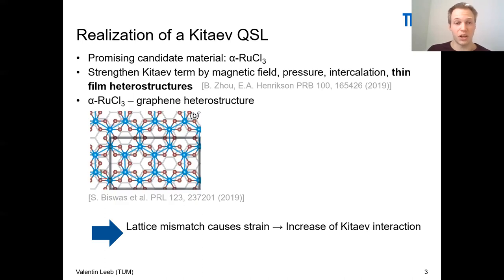What we would like to focus on is a heterostructure out of alpha-ruthenium trichloride and graphene. This is schematically depicted in this image on the left hand side, where you can see the graphene lattice as gray in the back, and then on top of it, the ruthenium trichloride, and you can see the honeycomb lattice in blue and the spins are sitting there.